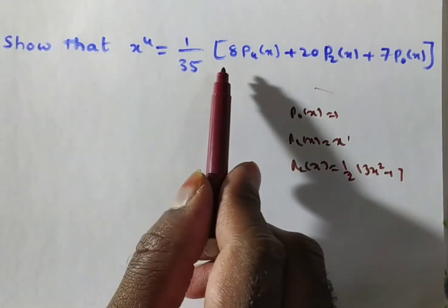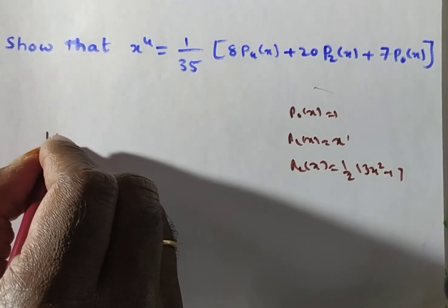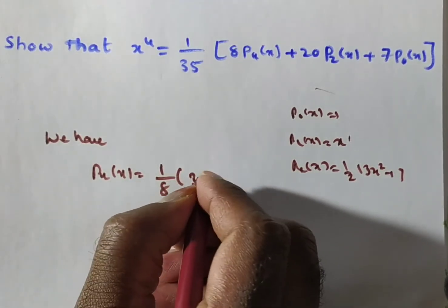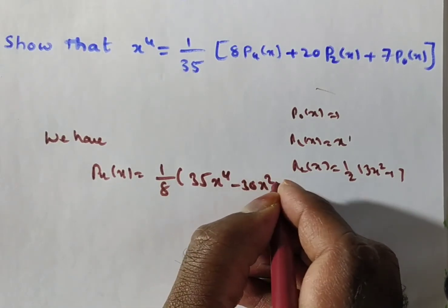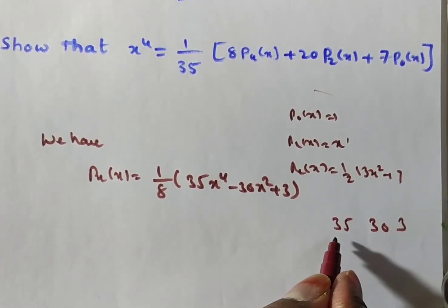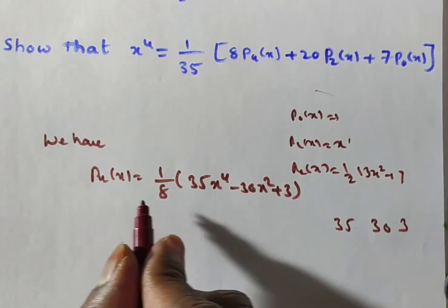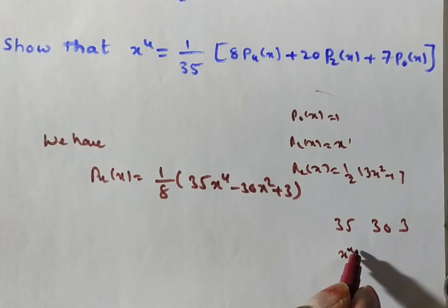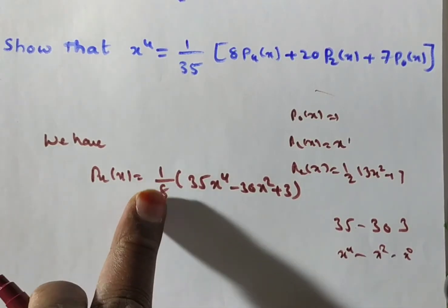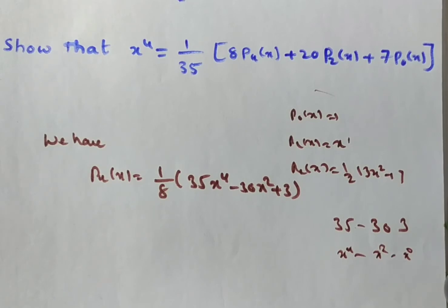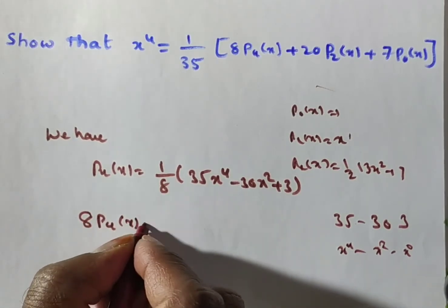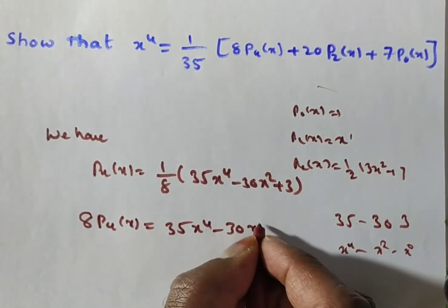Now to find x⁴, first write down P₄(x). We have P₄(x) = 1/8·(35x⁴ - 30x² + 3). Remember this — I remember 35 and 3, with alternate signs, and even powers x⁴, x², x⁰ descending. From this, 8·P₄(x) = 35x⁴ - 30x² + 3.